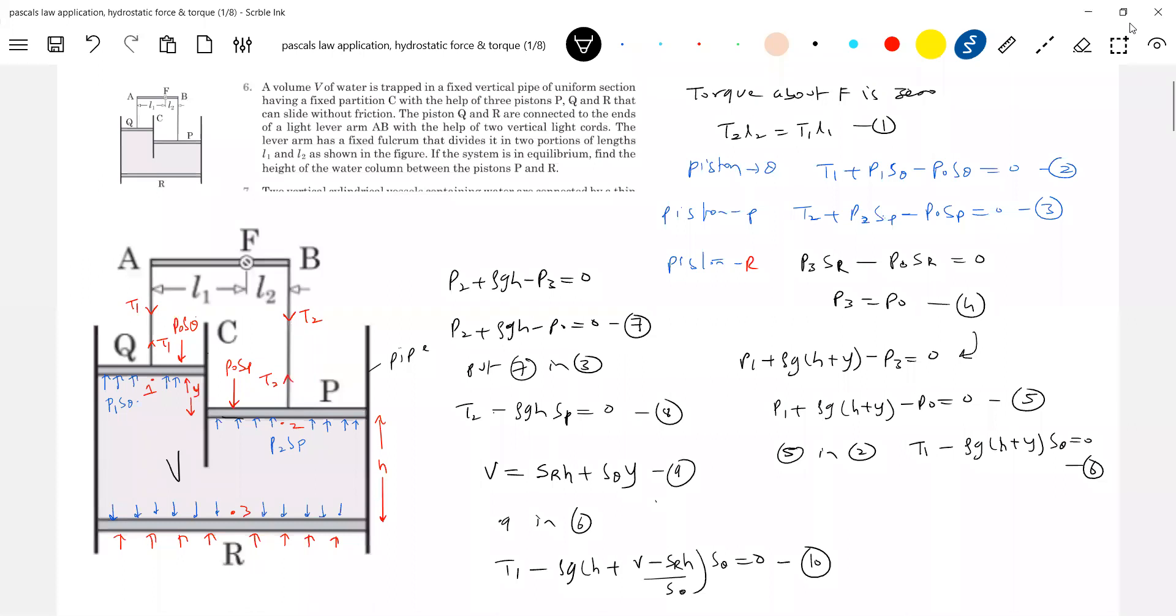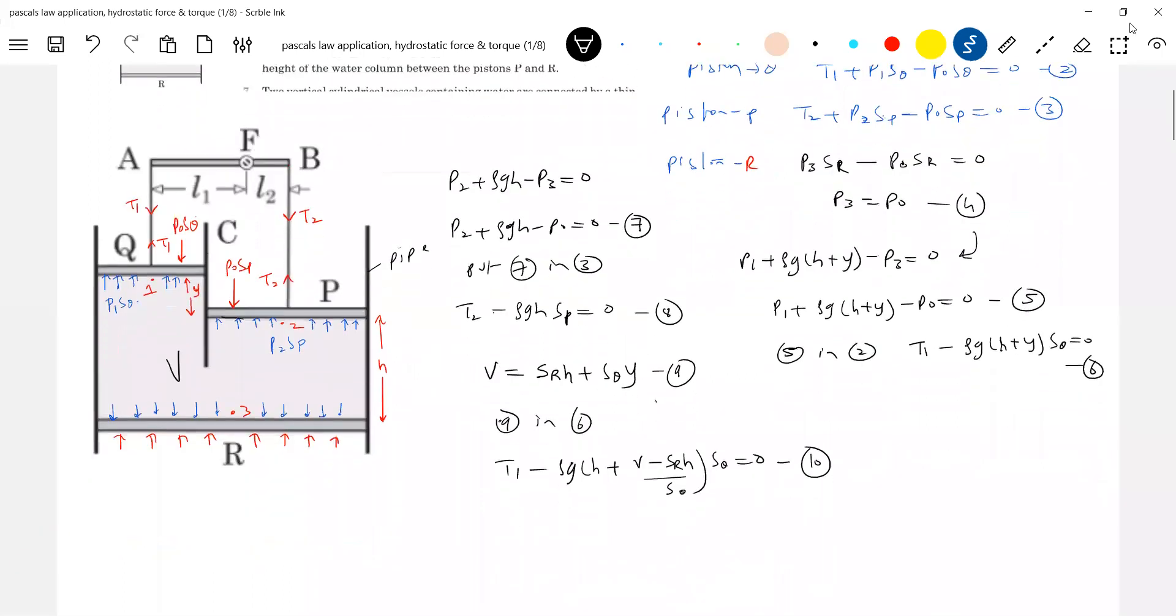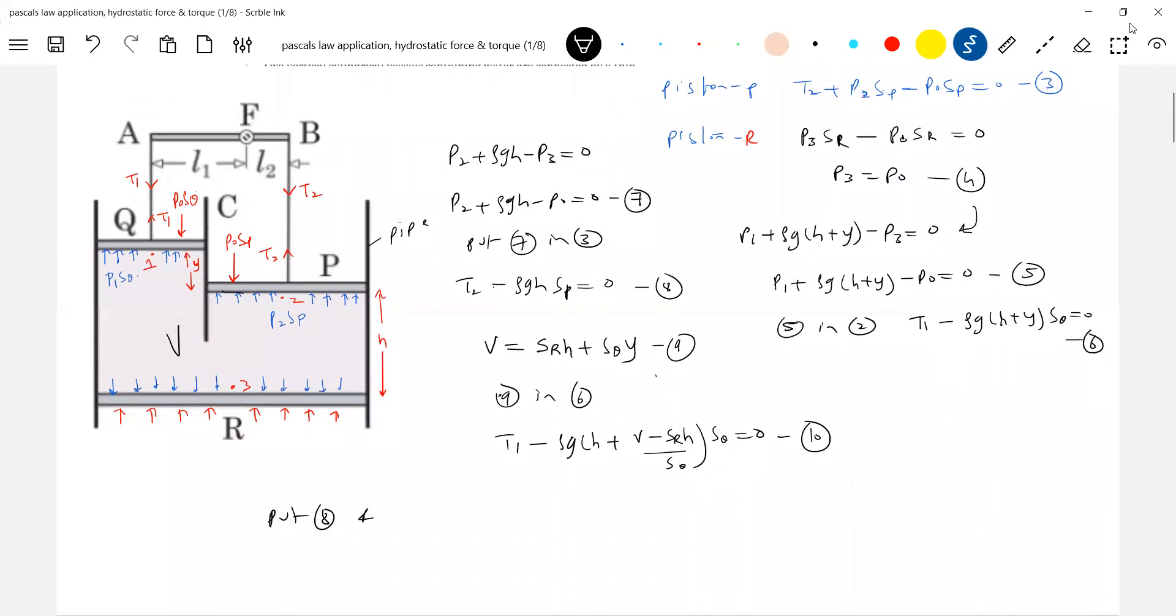Now we have T2. So substituting 8 and 10 in equation one will get expression for h. Check the calculation, can you do it afterwards? And I'll go for the next idea. Substituting 8 and 10 in one will get the required answer. So we'll get the answer. Final answer will be h = V·L1/(L1 + L2)·Sp.